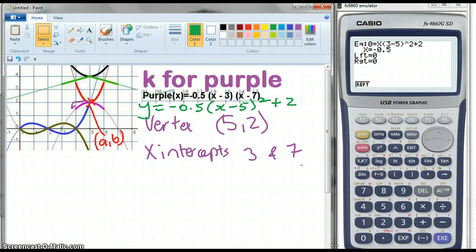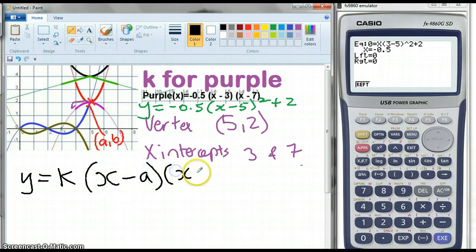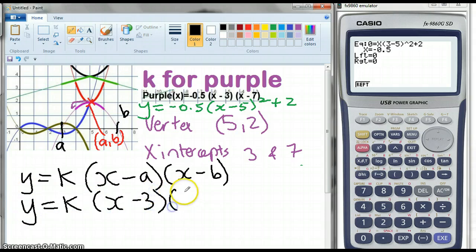So this time, we're looking at the intercepts. So we're going to use the general equation of y equals k(x minus a)(x minus b), where a and b are, this time, the x-intercepts. So y equals k(x minus 3)(x minus 7).